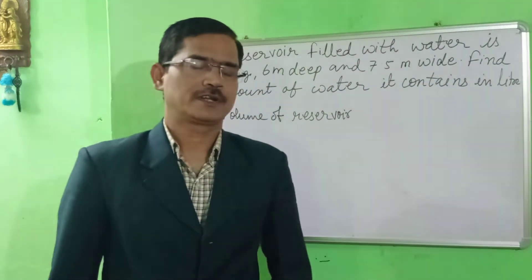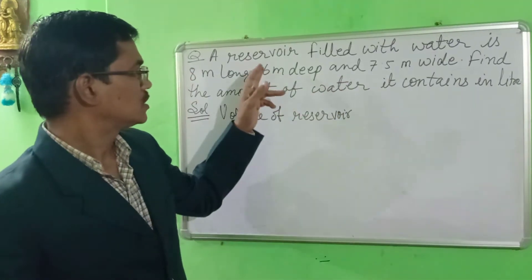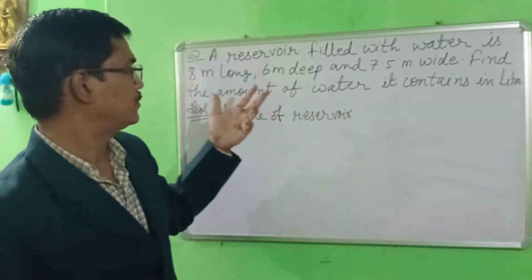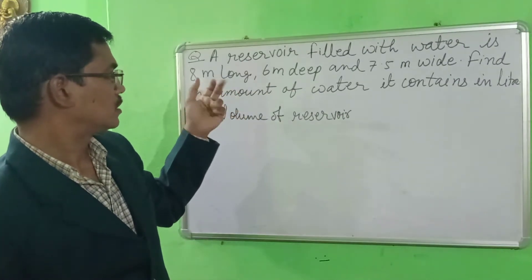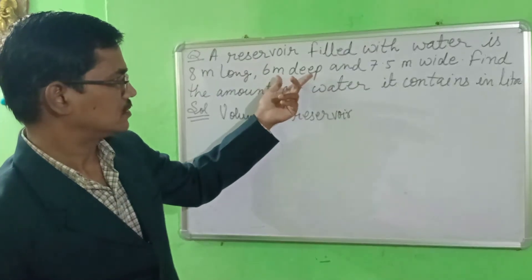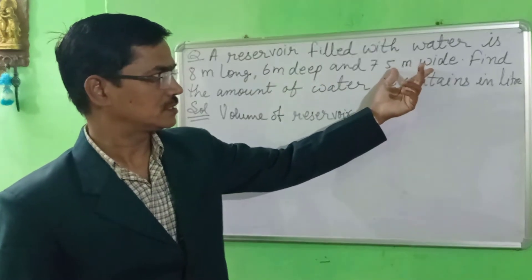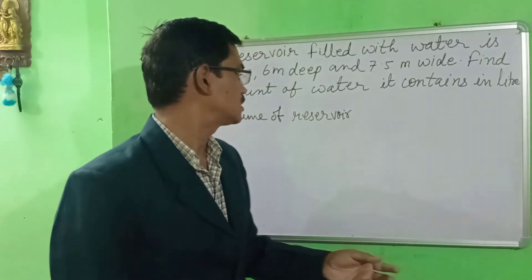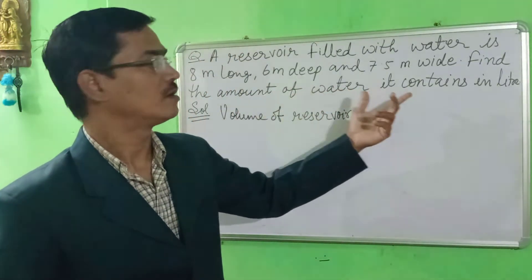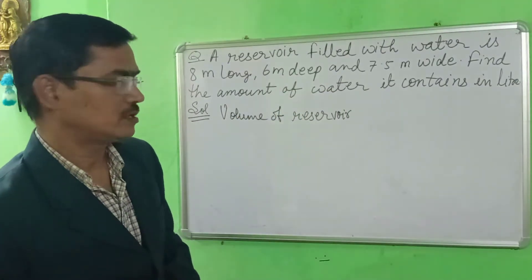Hello everyone. Today I have taken one topic related to volume. The question is: a reservoir filled with water, the length of the reservoir is 8 meters long, the depth is 6 meters, and the width is 7.5 meters. The question is: you have to find out the volume of water it contains. So let us start.